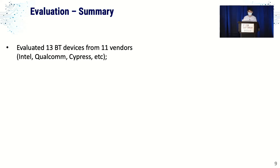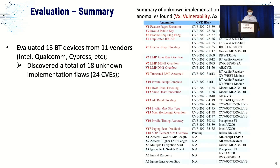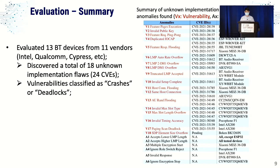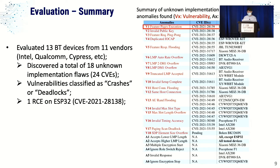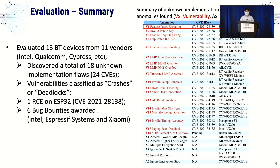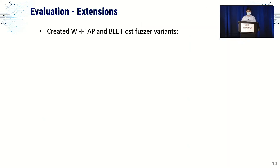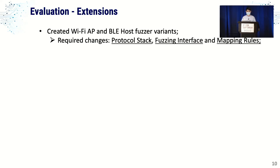In summary, we evaluated 13 devices from 11 vendors, discovered 18 unknown implementation flaws totaling 24 CVEs, classified as crashes or deadlocks — plus one remote code execution on the ESP32, the same device used for the fuzzing interface. We also received six bug bounty awards. To demonstrate the framework's extensibility, we created variants for Wi-Fi and BLE, which only require changing the protocol stack, fuzzing interface, and mapping rules. For Wi-Fi and BLE, reverse engineering was not needed since those are more open source.